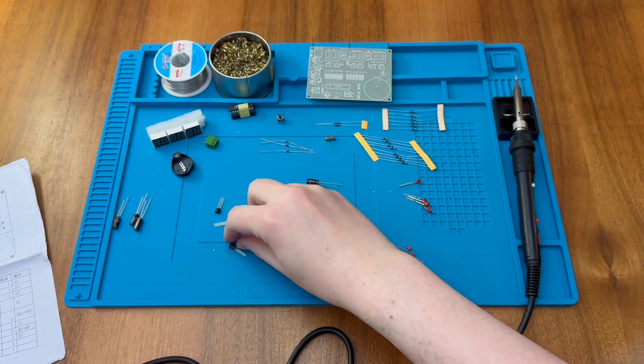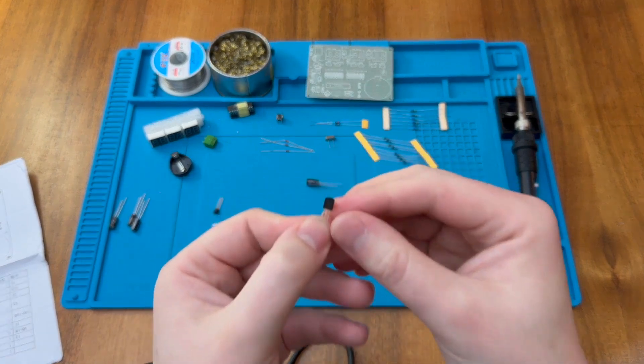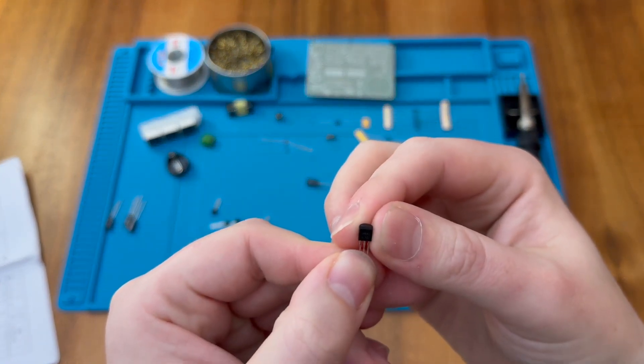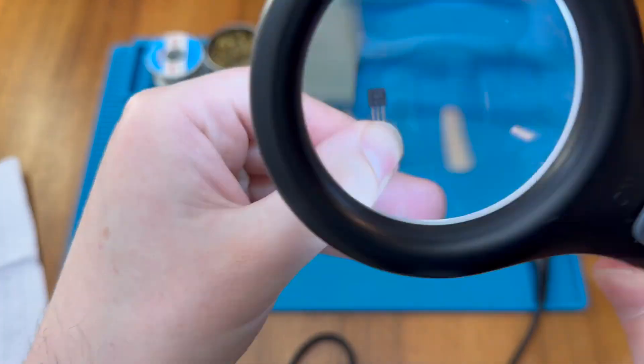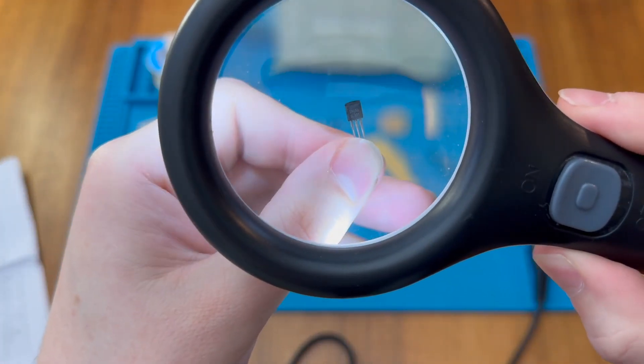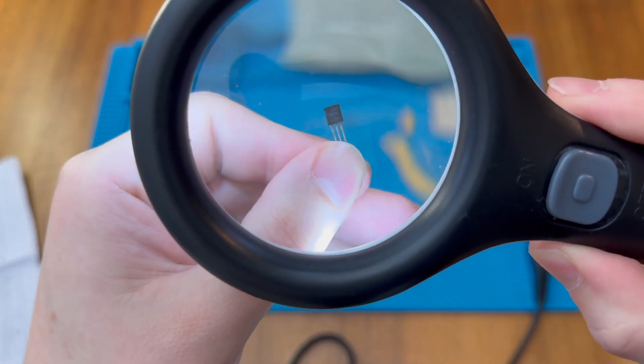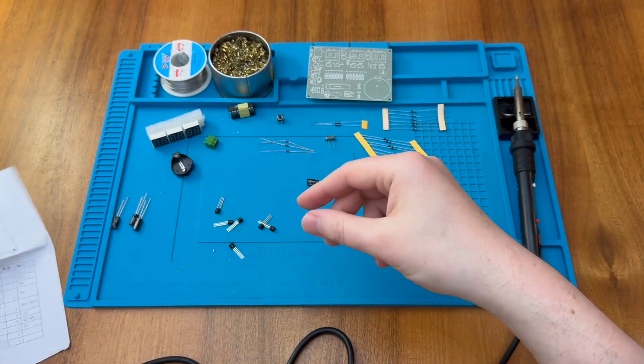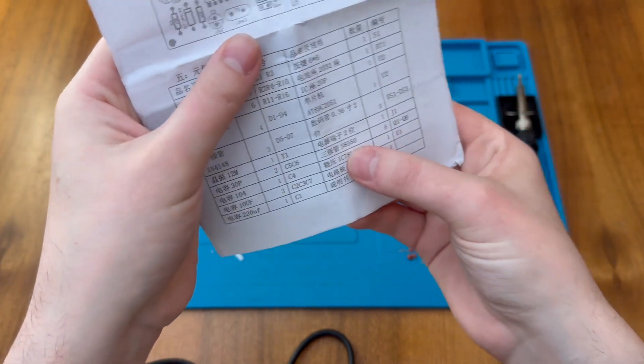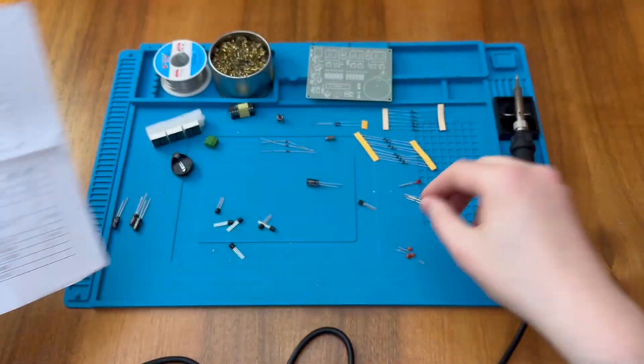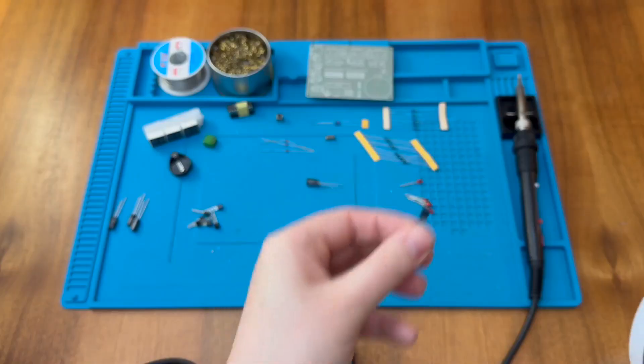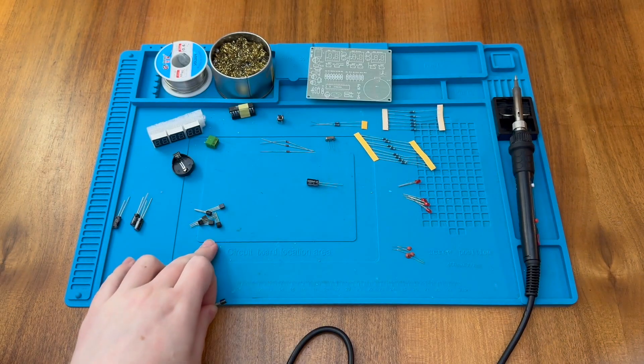We also have some transistors here. And I hope these are all the same type because otherwise that could get confusing. I don't know if you can see that, but I think it says 8550. There should be six S8550s just here, so there's six of those. So those are the 8550 transistors.